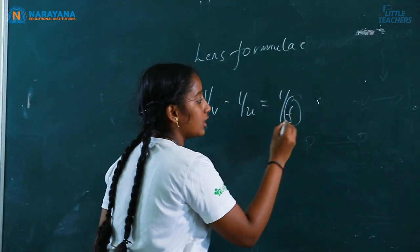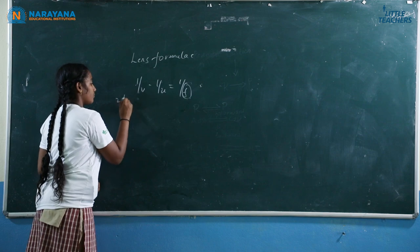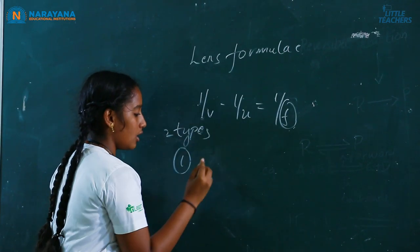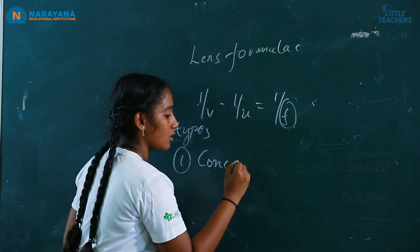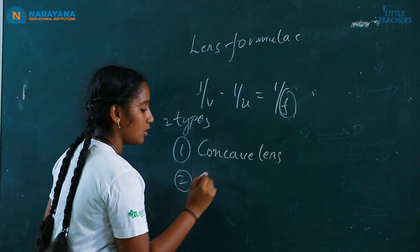Here we can conclude that we are going to know about the focal length. There are two types: first one is concave and second one is convex.